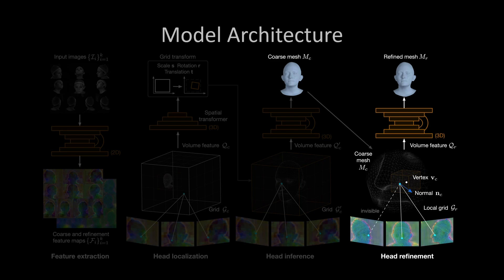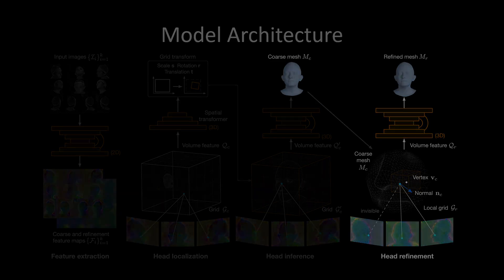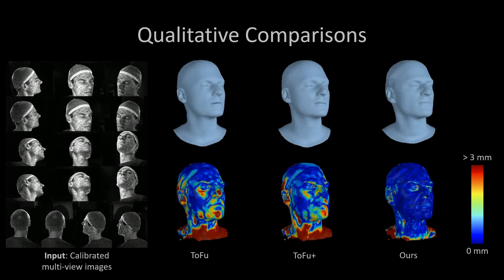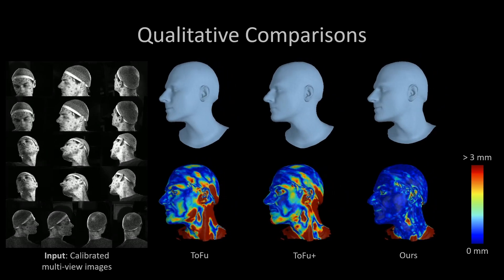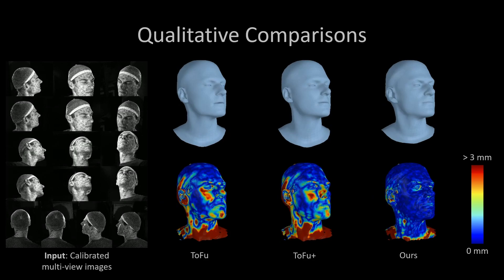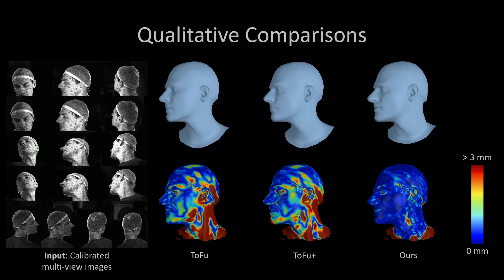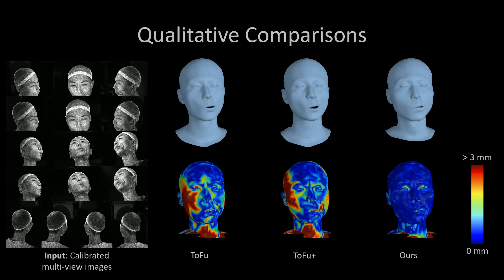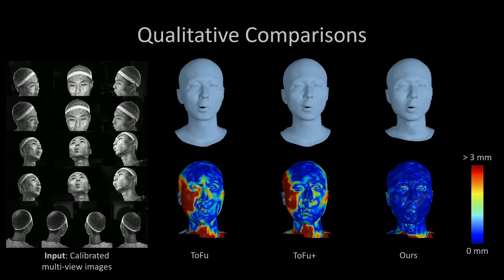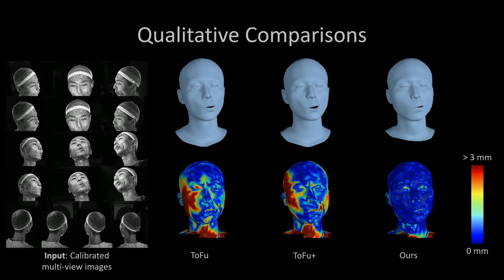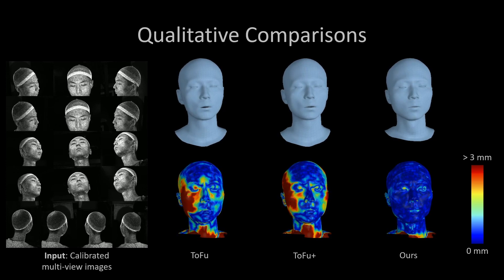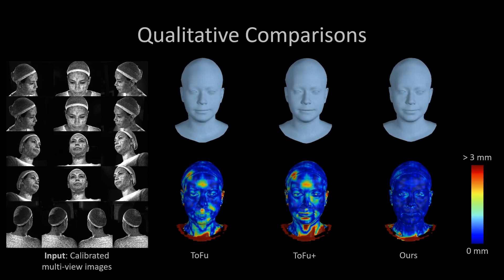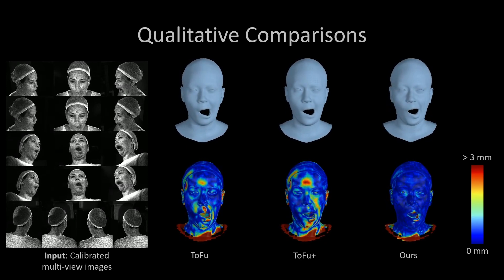To evaluate TEMPER, we compare it to TOFU, the current state-of-the-art method. TEMPER reconstructs 3D heads with head shapes closer to the reference scans, and therefore better recovers the identity face shape. TEMPER better captures extreme head poses, while TOFU and TOFU+ show high errors in the neck region. TEMPER also better captures asymmetric facial expressions.